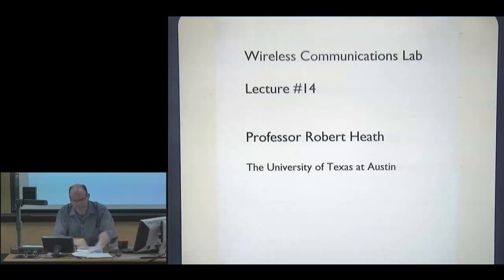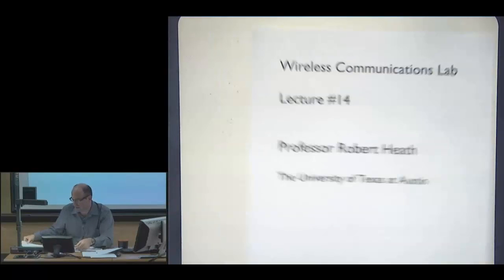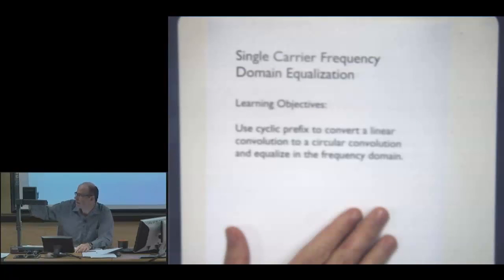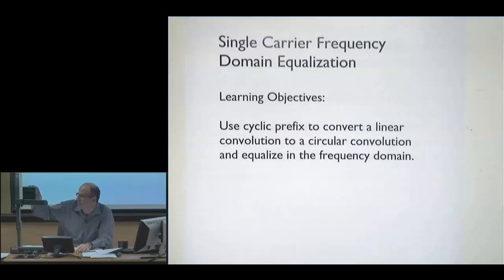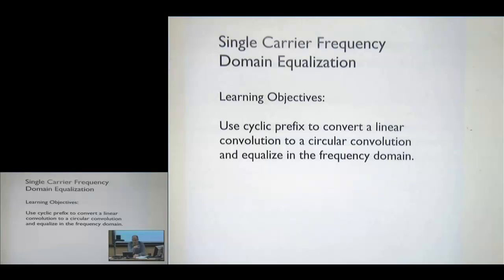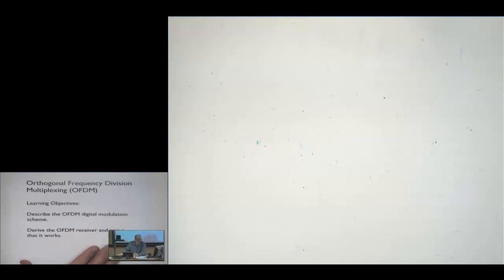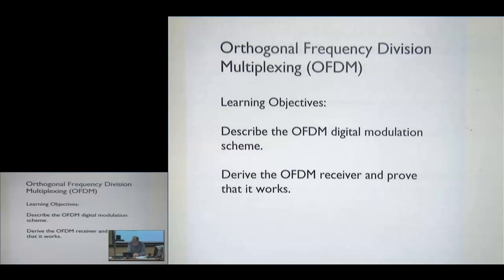This is the Wireless Communications Lab, and today we're going to talk about equalization in the frequency domain. We'll cover two important techniques. The first is called single carrier frequency domain equalization, where we use a cyclic prefix to convert linear convolution into circular convolution, allowing us to equalize in the frequency domain at the receiver. The second technique, more widely used, is called orthogonal frequency division multiplexing, where we introduce a cyclic prefix and also convert information from the time to the frequency domain.